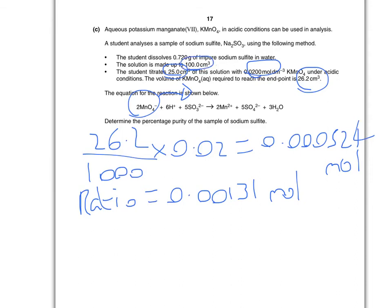We analyzed 25 centimeters cubed of sodium sulphite, but that was out of a total of 100. So I'm now going to times it by 4 to find out how many moles were in that 100 centimeters cubed. And that comes to 0.00524.